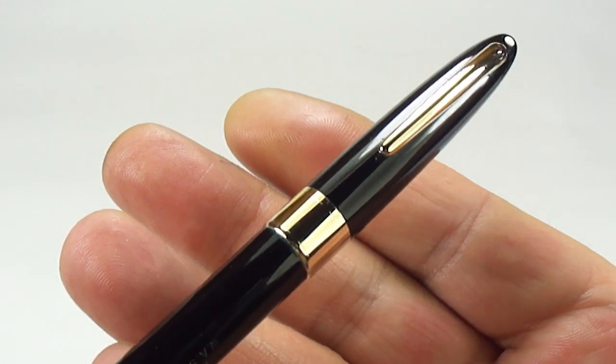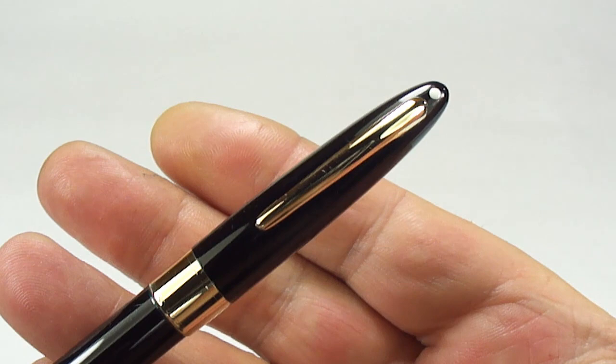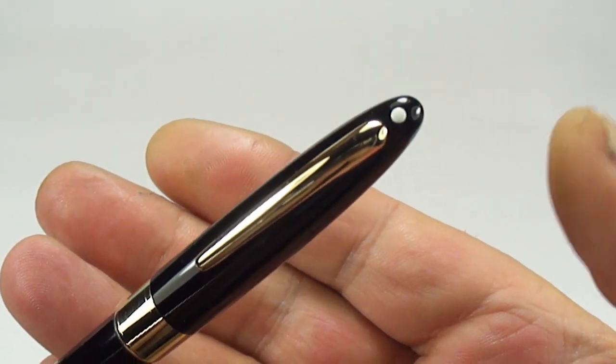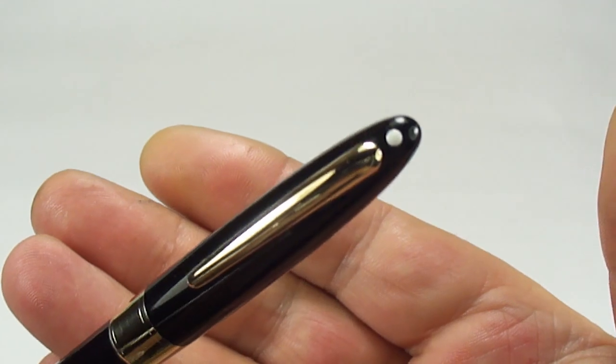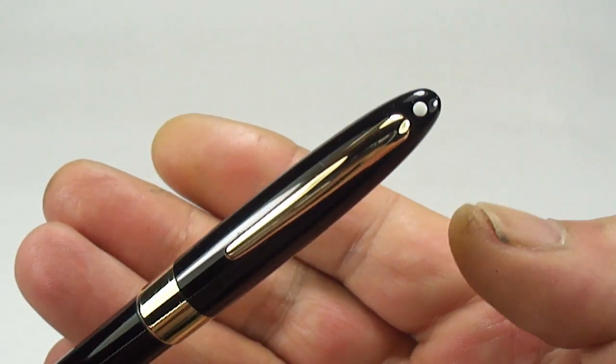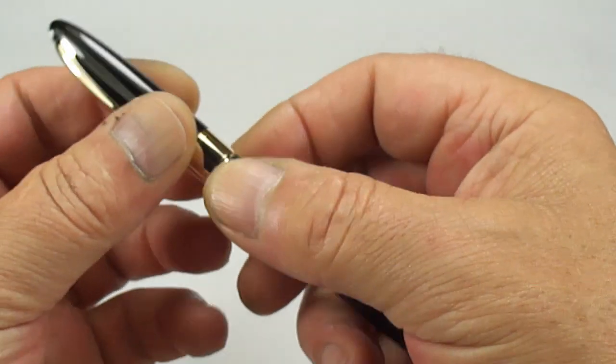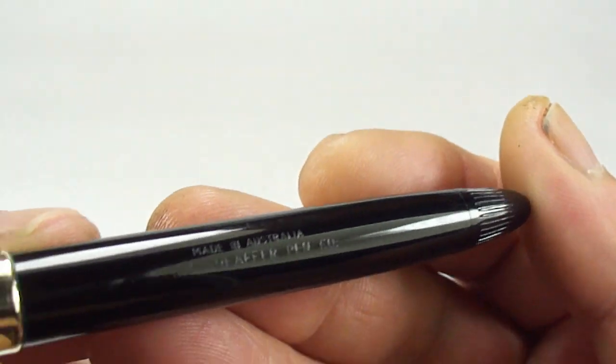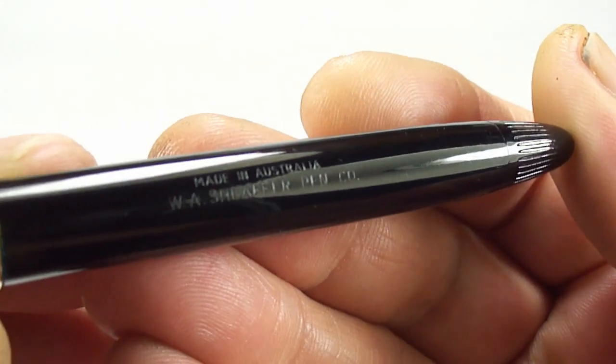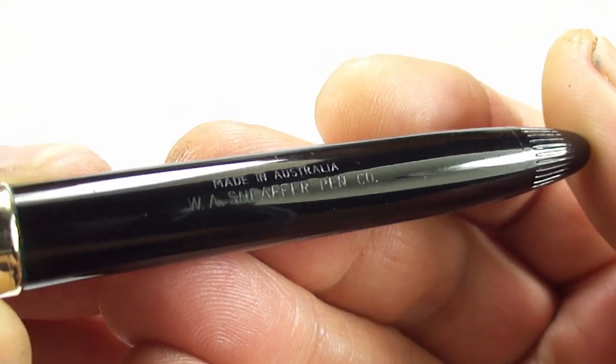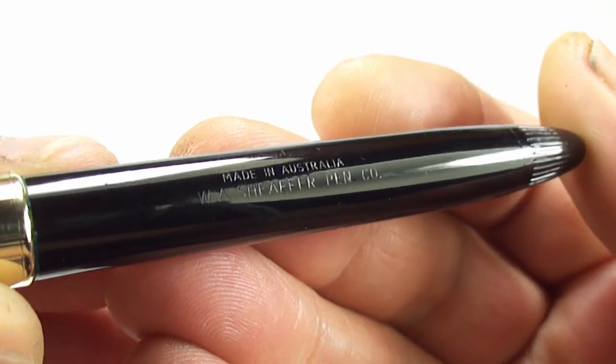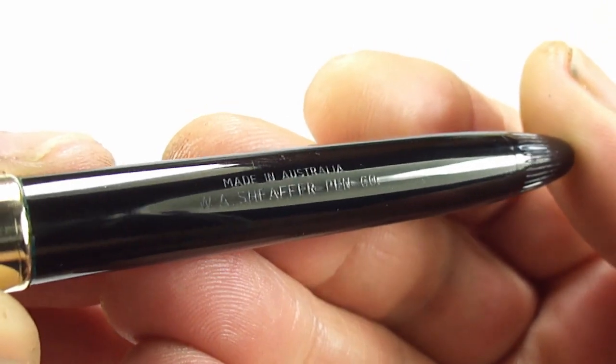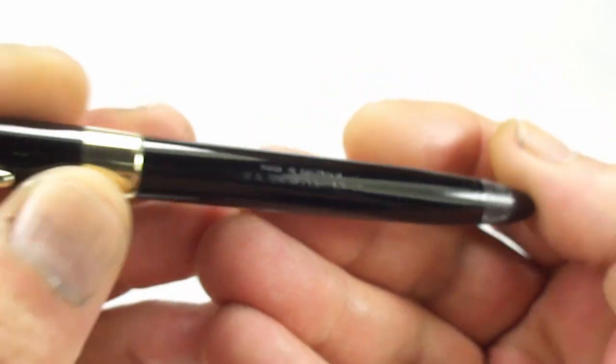This particular one comes in this classic black with gold filled trim and quite a large cap band, as you can see there. The very recognizable clip to the cap there, with the again very recognizable white dot to the very top of the cap. Let's take you to the barrel imprint first of all. There we have it: Made in Australia, Sheaffer Pen Company. A lovely clear imprint as you can see.